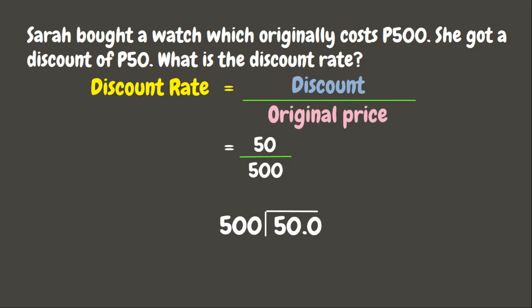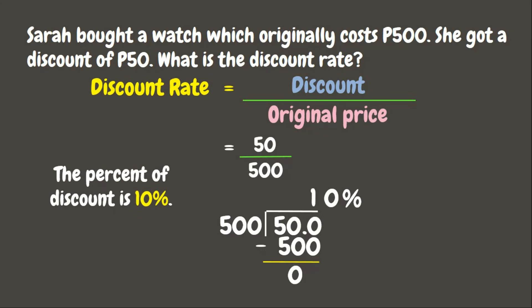Since 50 is smaller than 500, we need to add 0.0. Now let's divide: 500 divided by 500 is 1. One times 500 is 500. Subtracting gives us 0. But since we are looking for the discount rate or percent of discount, we need to convert — move the decimal point two times to the right: one, two. Put a zero in the empty place value. Finally, change the decimal point into a percent sign. Our answer: the percent of discount is 10 percent. Wonderful!